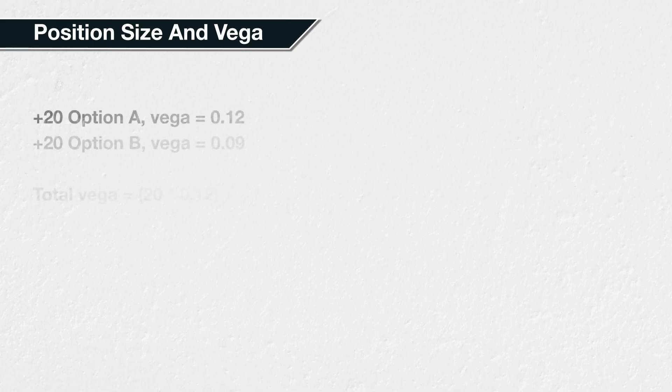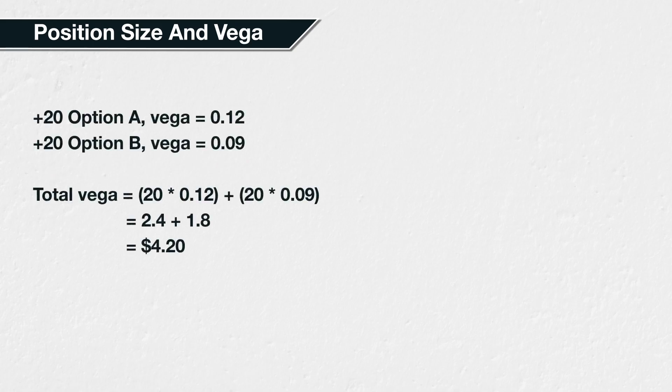If you purchase 20 calls with a vega of 0.12, and purchase 20 puts with a vega of 0.09, the total vega of your position is $4.20. This is calculated as 20 multiplied by 0.12, plus 20 multiplied by 0.09, which equals $2.40 plus $1.80, which equals $4.20. This means you would expect the position to gain $4.20 if implied volatility increased by 1% and all else remains equal.